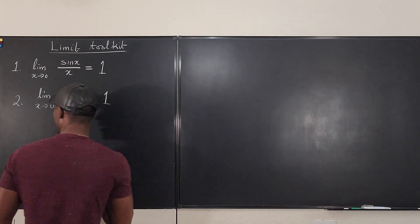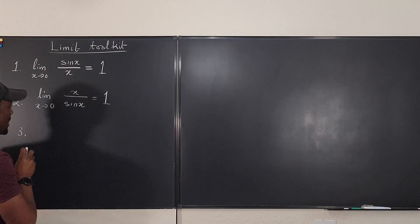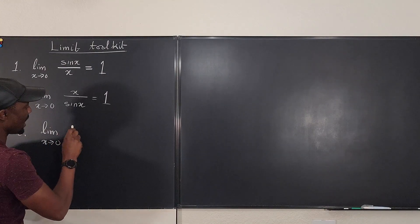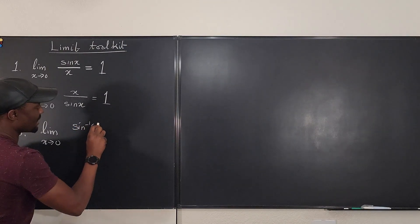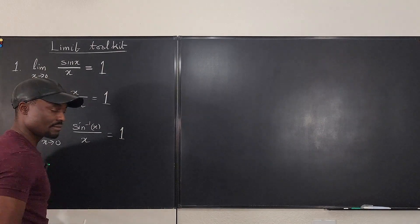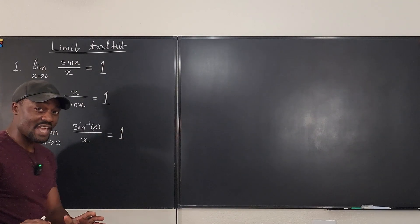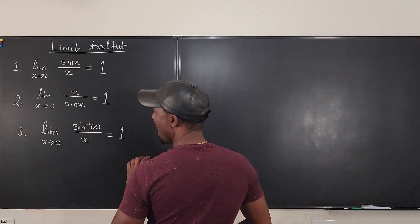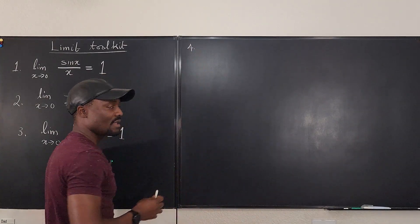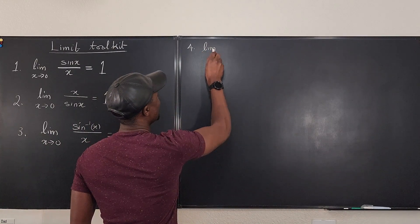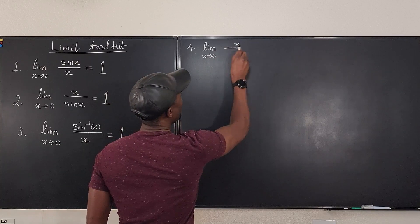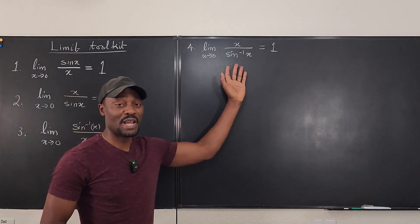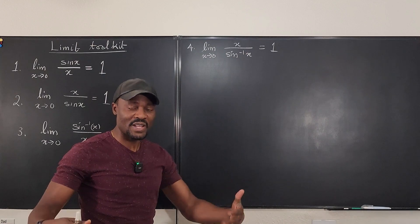Now let's go to the third one. The third one is what you saw on the thumbnail: the limit as x goes to zero of arc sine of x divided by x is equal to one. The fourth one is just the flipped version — the limit as x goes to zero of x over arc sine of x, and your answer will also be one. If you apply L'Hôpital's rule to each of these, you'll find that your answer will always be one.